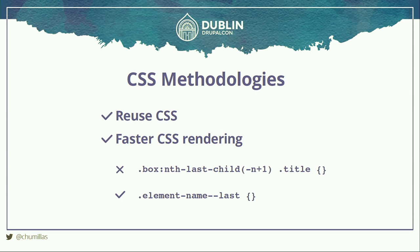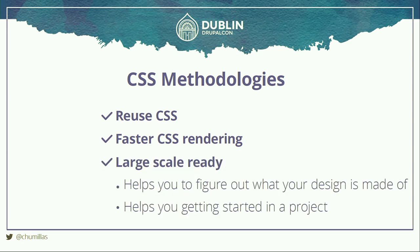For faster rendering: if you have a selector like `.box:last-child .title`, the browser doesn't start from the left — it finds all titles on the page first, then finds the last box, then renders. So it's really important to have only one class per element for faster rendering. This methodology also makes your projects large-scale ready and helps you understand what your designs will be made of.